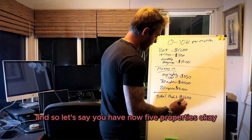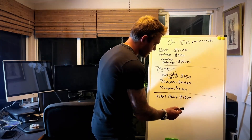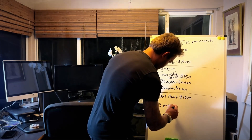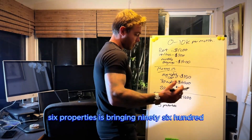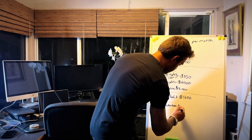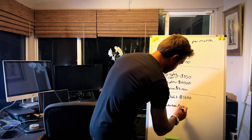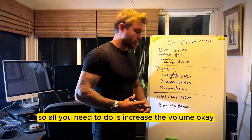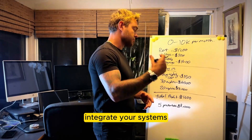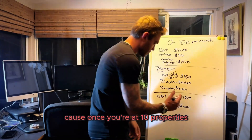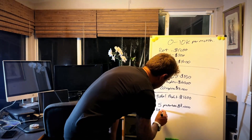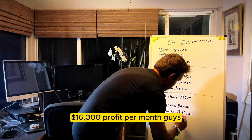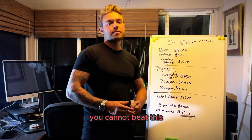Let's say you have five properties bringing you $8k per month, six properties bringing you $9,600 per month. All you need to do is increase the volume — more properties, integrate your systems, make it flawless, and get to that $10k per month mark. Because once you're at 10 properties, you're at $16,000 profit per month.